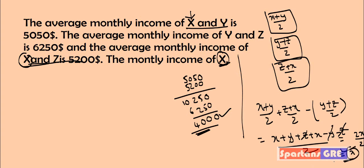So to get the value of X, you add the averages which contain X and subtract the average which does not contain X, so that you directly get the X value. Hope this is helpful. Thank you.